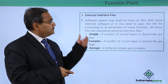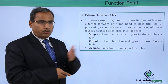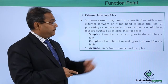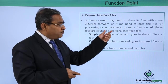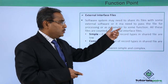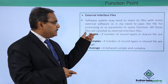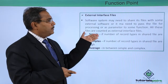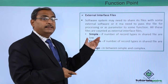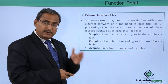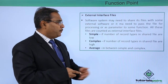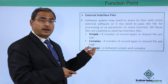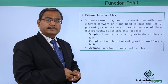Next is external interface files, which reside outside of the system boundary. A software system may need to share its files with some external software — it may need to pass the file for processing or as a parameter to some functions. All these files are counted as external interface files, used for communication between the software and other external software. Simple means if the number of record types in the shared file are low, complex means if they are high, and average is in between.